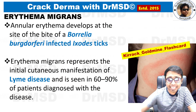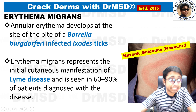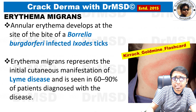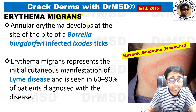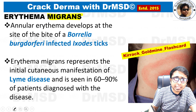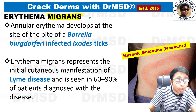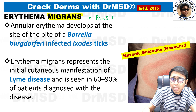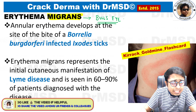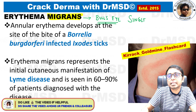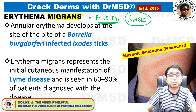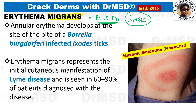Now let us see another condition where target lesions can be seen — erythema migrans. Both erythema multiforme and erythema migrans show target lesions, so how do we differentiate them? In erythema migrans, the target lesion is also called a bull's eye lesion, and importantly it is a single lesion. Observing the image, you can again see three zones: a central erythematous zone (zone one), a pale zone (zone two), and an erythematous rim (zone three).